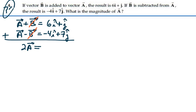And then on the right-hand side, we're going to have 6i plus a negative 4i, which will be 2i. And then we'll have j plus 7j, which is 8j. Dividing both sides by 2, we have A is equal to i plus 4j.